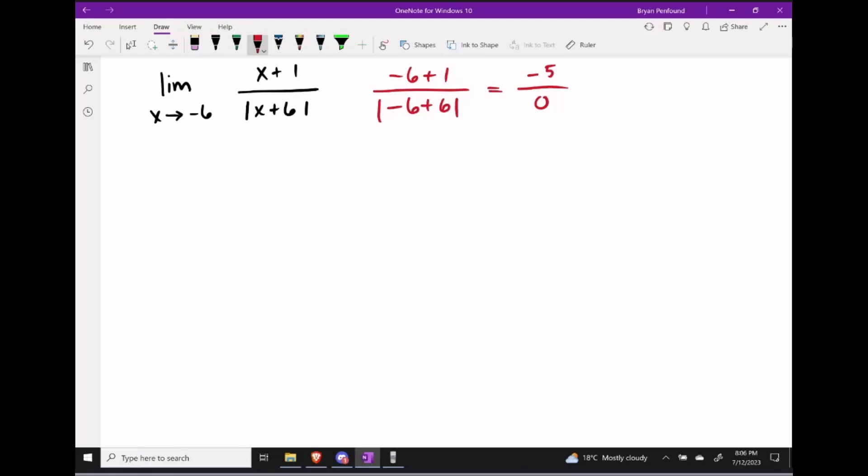Since we have the form of a number divided by 0, this indicates that we are dealing with a vertical asymptote. So our one-sided limits and maybe our overall limit are going to be unbounded and maybe tending towards positive or minus infinity.